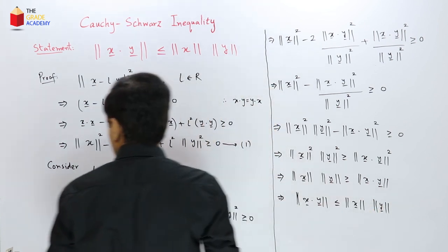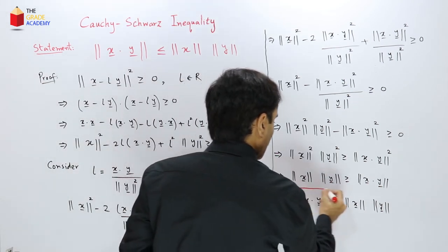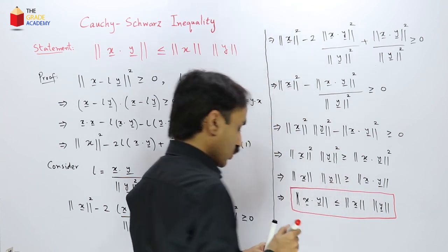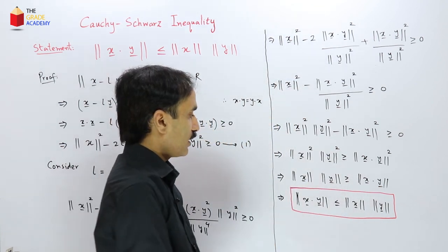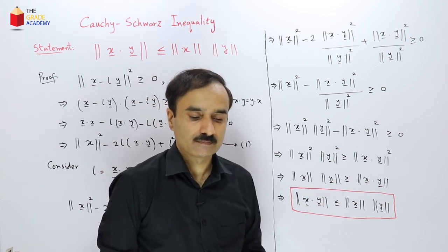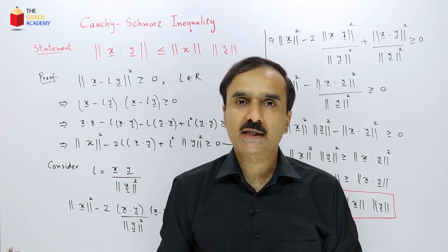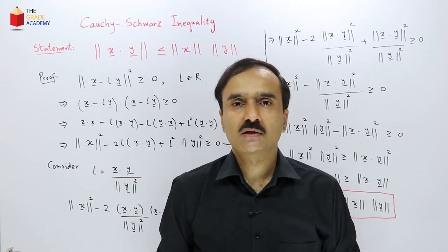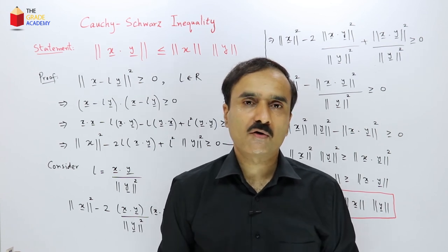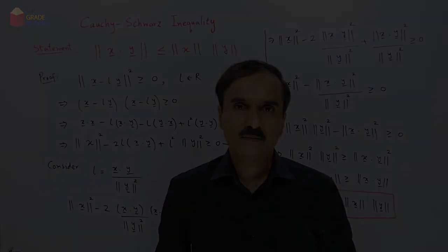This is the required Cauchy-Schwarz inequality. The Cauchy-Schwarz inequality is basically a consequence of the inner product or dot product of Euclidean vector space. Thank you.